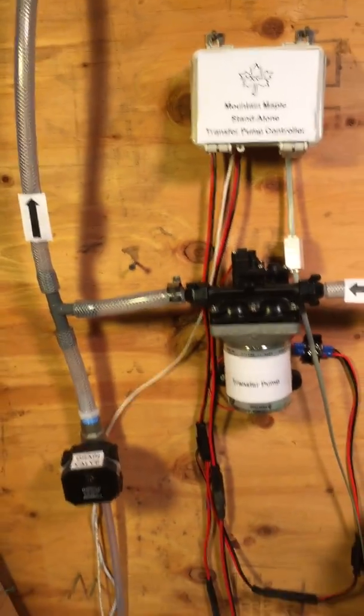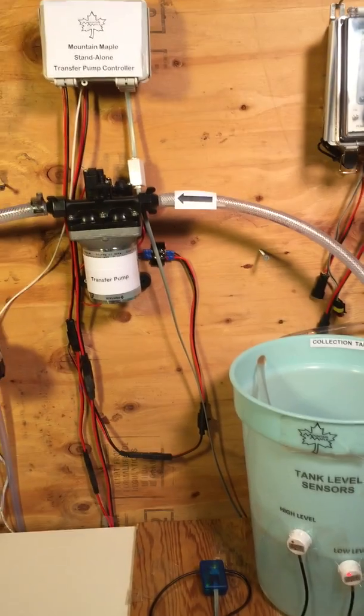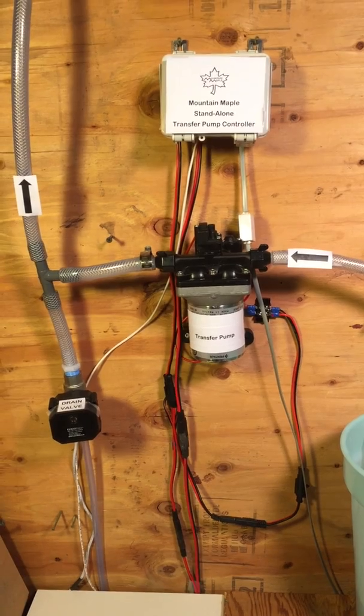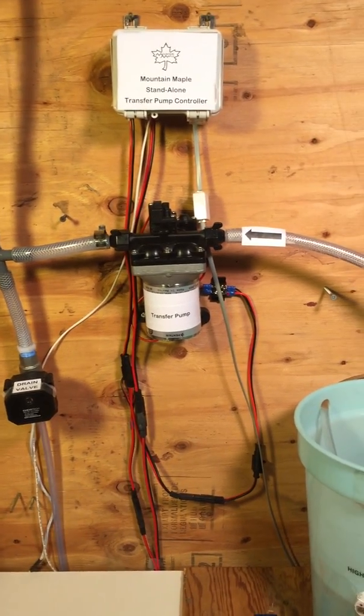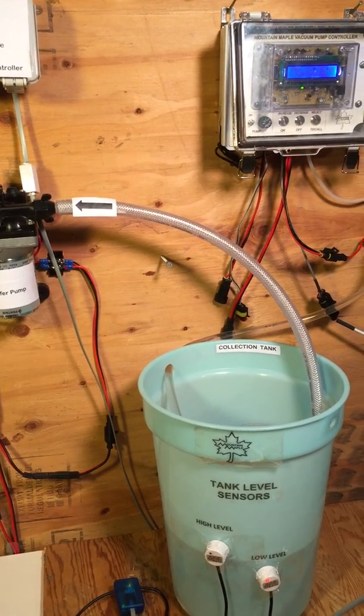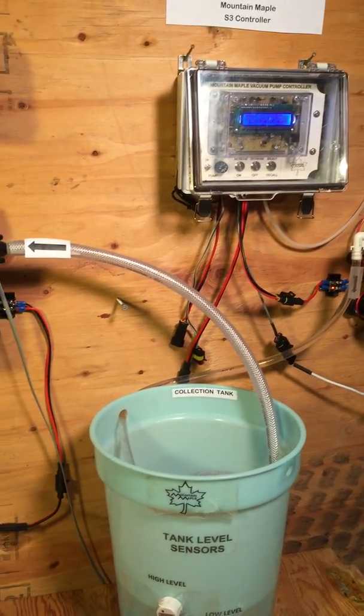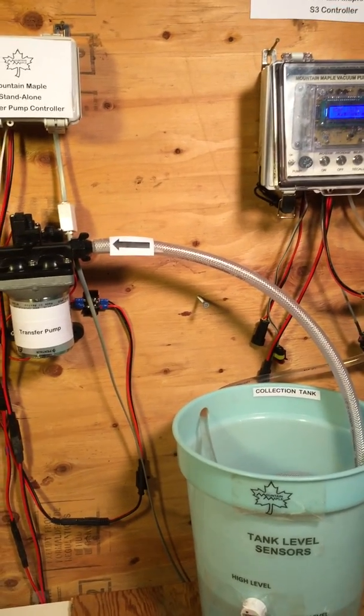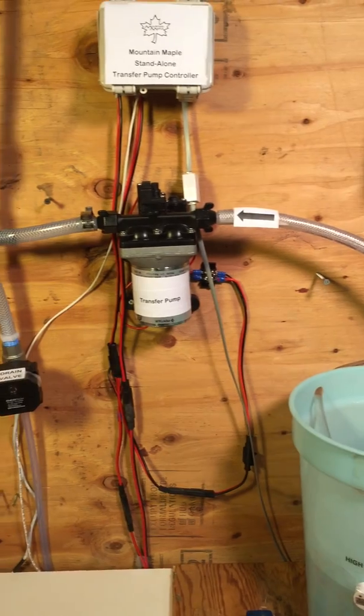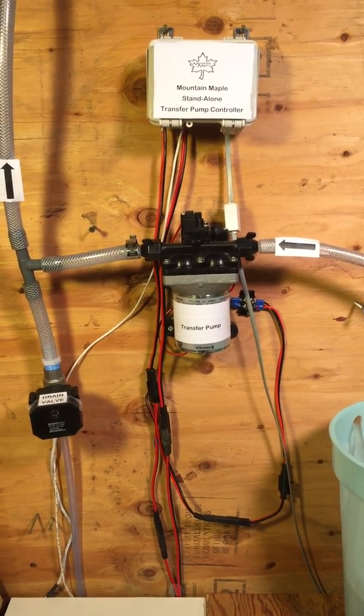So what this does is this will allow you, if you have a collection tank somewhere in the woods, you can put this unit out there. Whether the collection tank is fed by gravity or an S3 controller pump that we also have available, it will empty the tank and pump it up to the sugar house just kind of all by itself.